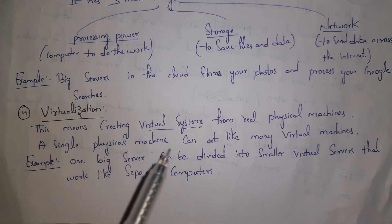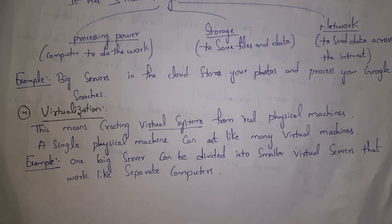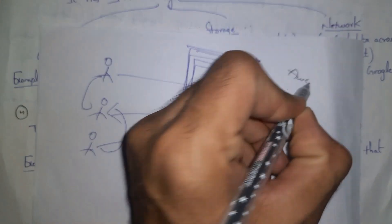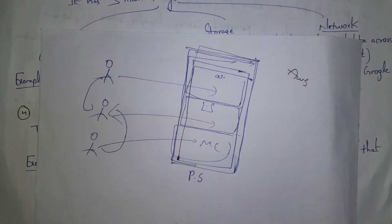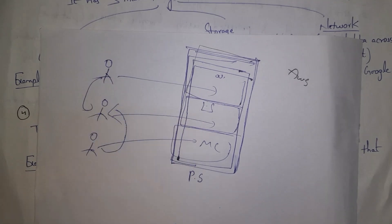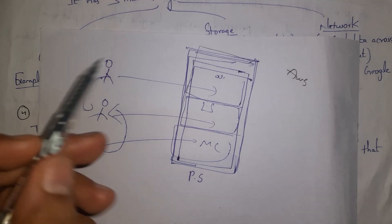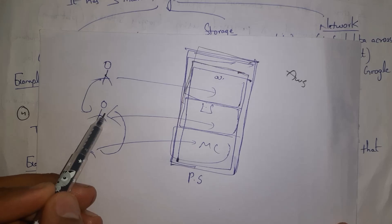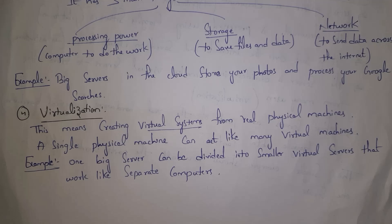The fourth part is virtualization. Virtualization means creating virtual systems from real physical machines — inside a single physical computer we can create multiple virtual computers. For example, in AWS, a single physical server can be given to multiple users: one person creates a Windows virtual server, another creates a Linux virtual server, another a Mac virtual server. All these virtual servers are independent — one person cannot see another's data. So one big server can be divided into smaller virtual servers that work like separate computers.